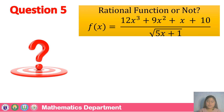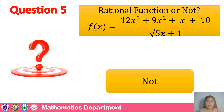For the last question: F of x is equal to 12x raised to 3 plus 9x raised to 2 plus x plus 10, all over square root of 5x plus 1. That is not a rational function because the denominator is not a polynomial — it shows a fractional form, which is 5x plus 1 raised to one-half.